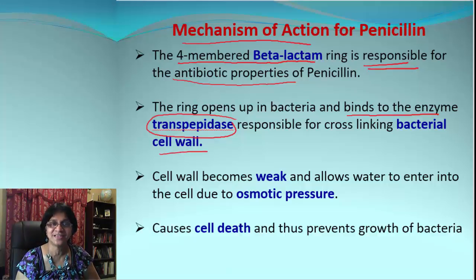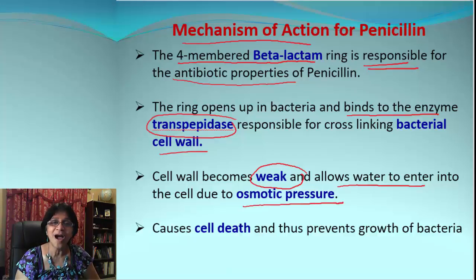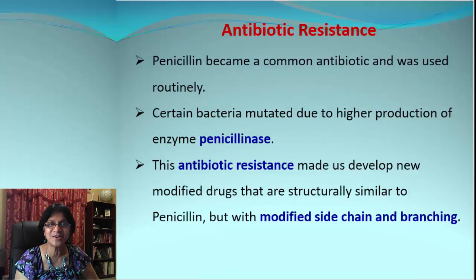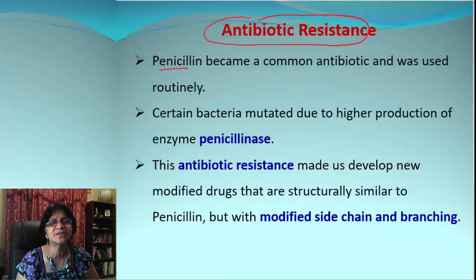The bacterial cell wall becomes weak and then starts allowing water to enter due to osmotic pressure, finally resulting in bacterial cell death. That's the way it can prevent the growth of bacteria. Isn't it a fascinating story how it resists bacterial growth? Now, you have likely heard about antibiotic resistance — penicillin was becoming more and more commonly used and was used extremely routinely.